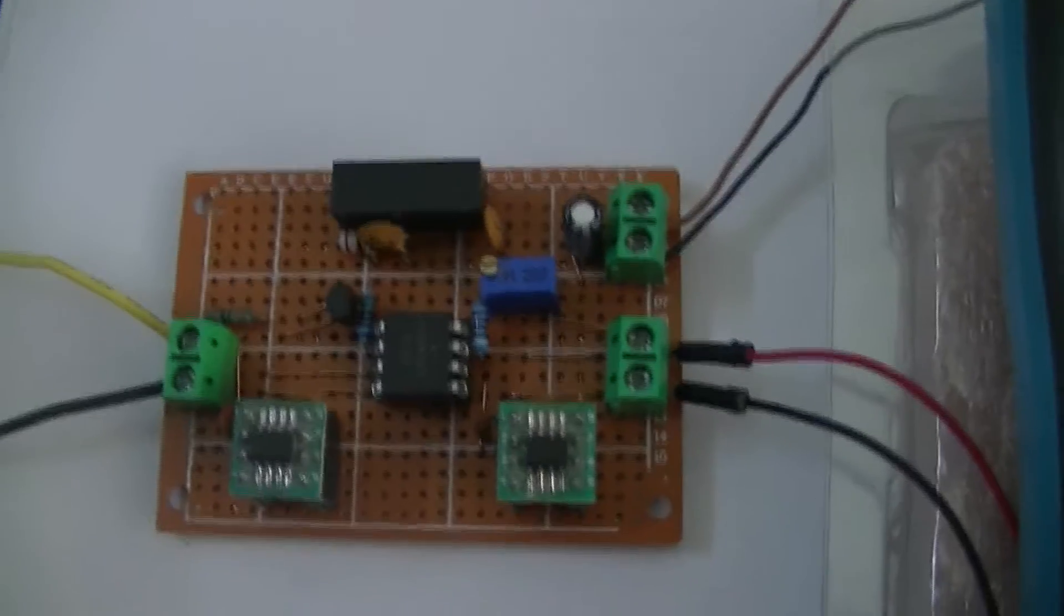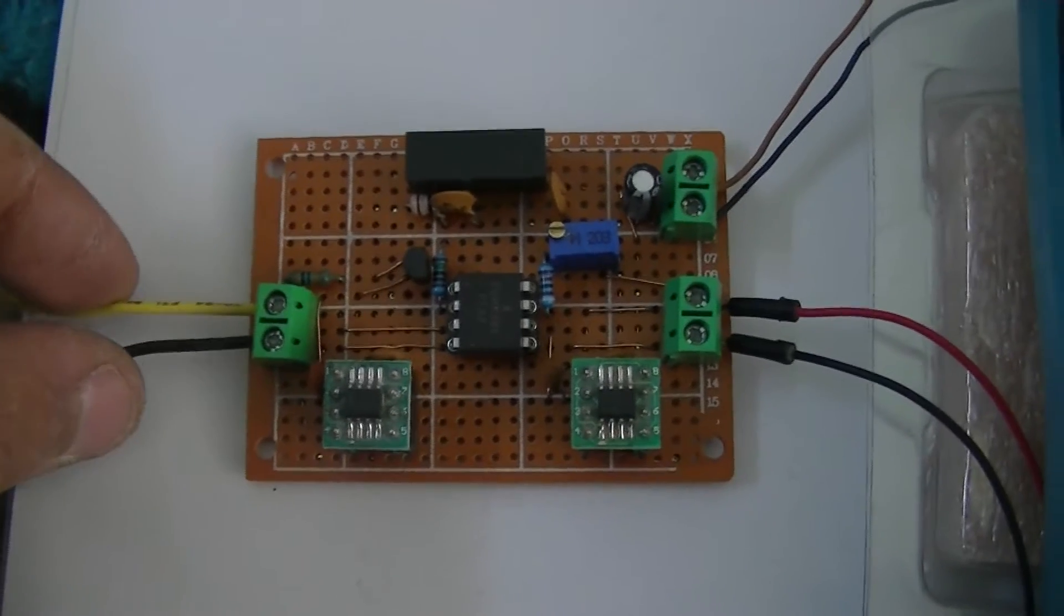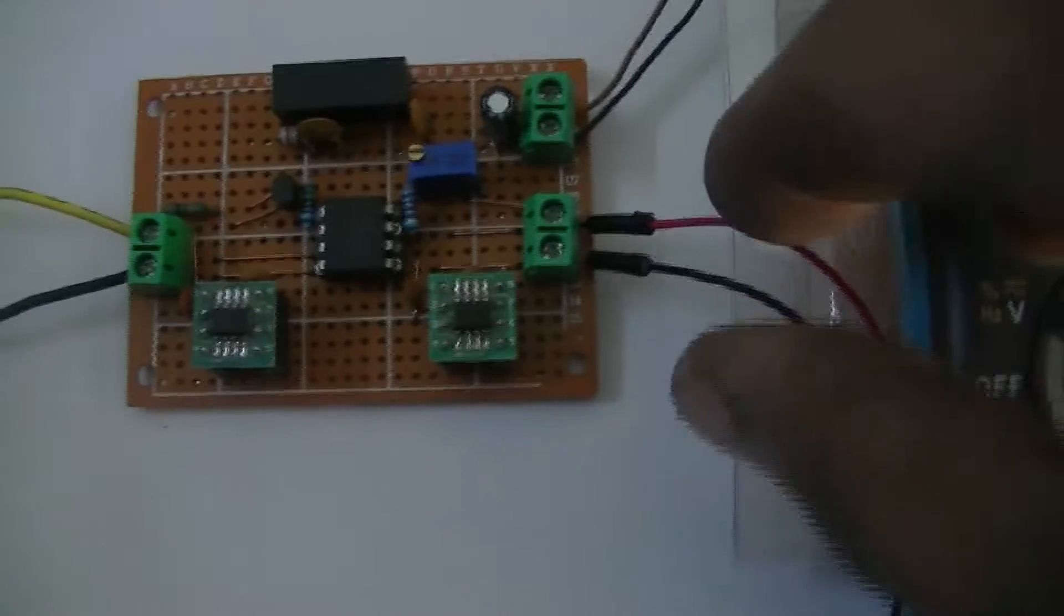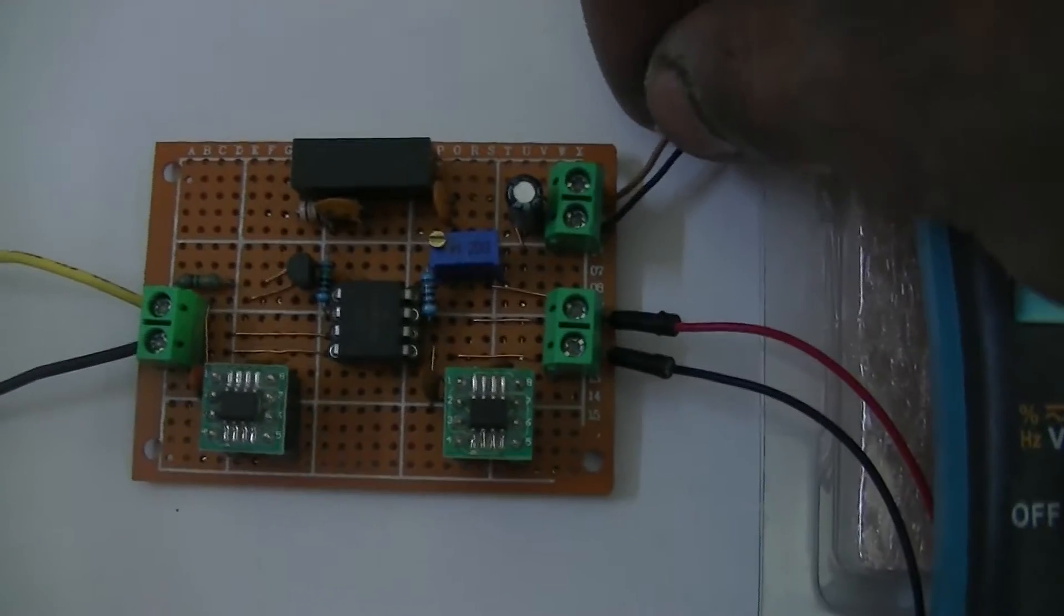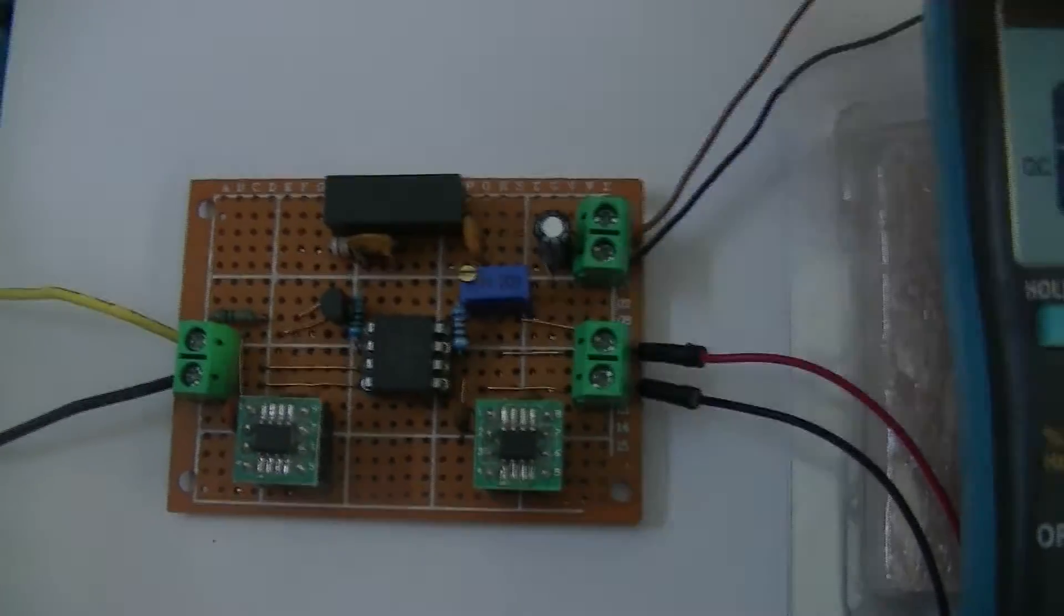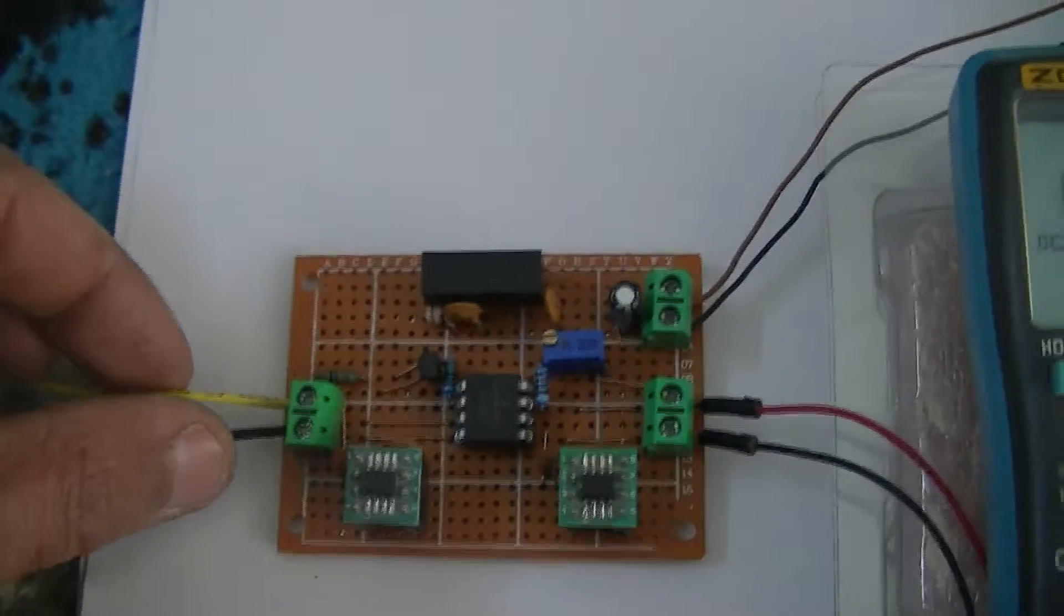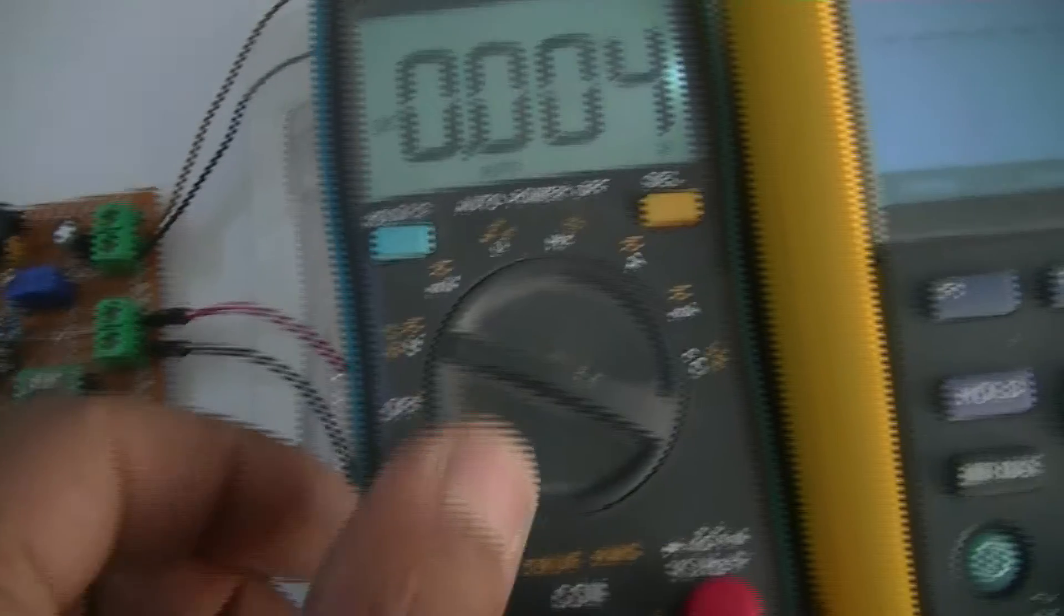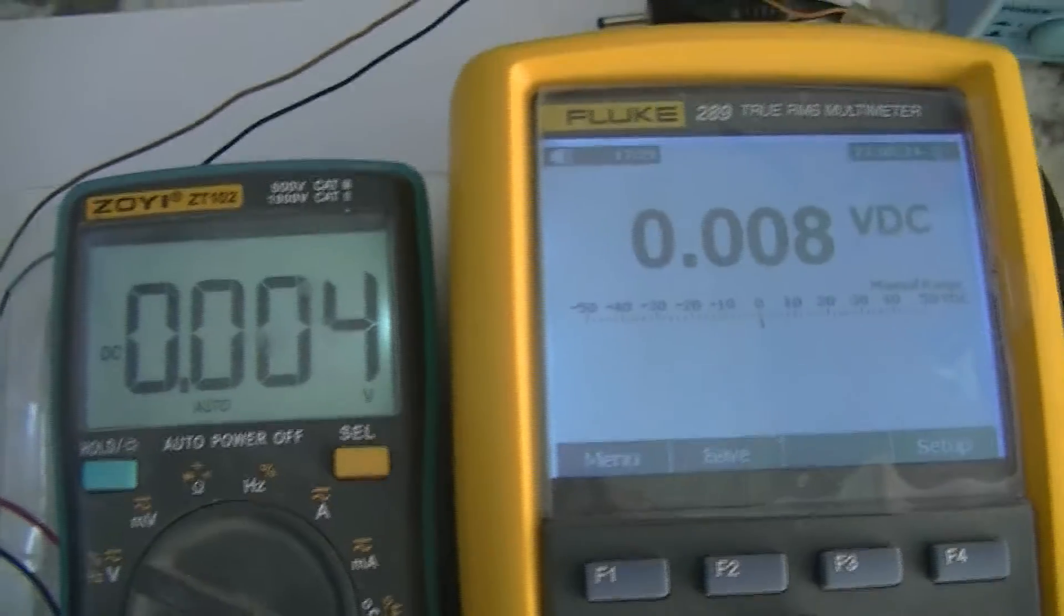This is the input signal of the amplifier and this one is the output signal. These terminals here are the plus five volt power supply. The input signal is connected to this digital multimeter and the output signal is connected to this digital multimeter.